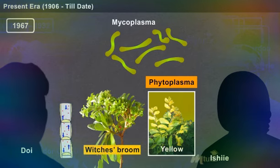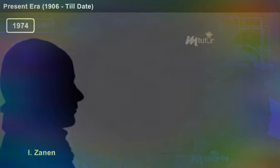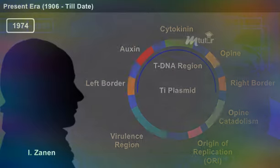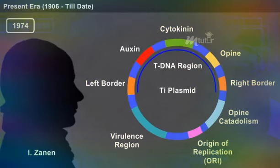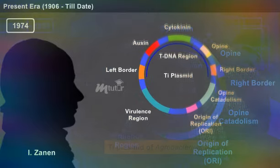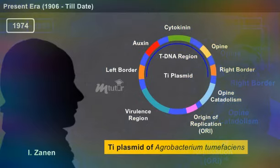In 1974, Zaenen and his co-workers demonstrated the Ti plasmid in Agrobacterium tumefaciens.